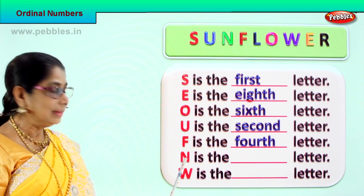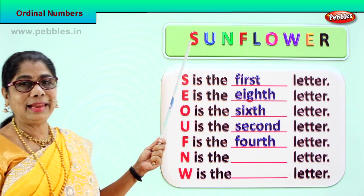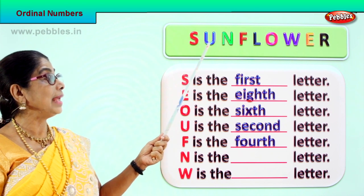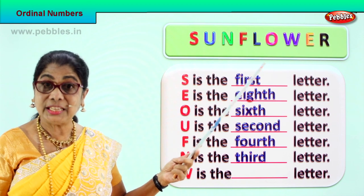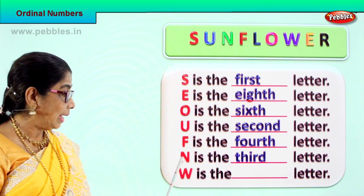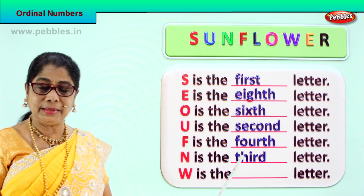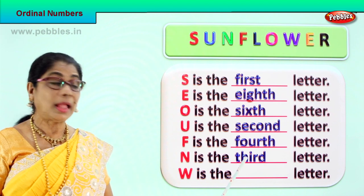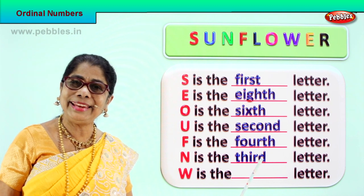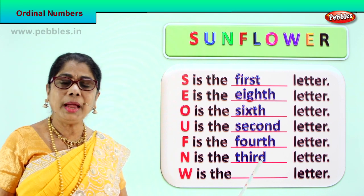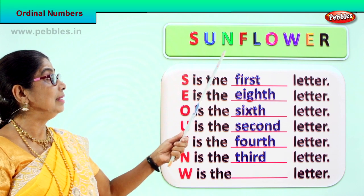Now let's look at another — this letter N here. What is the position of letter N? First, second — N is in the third position. Third. Spell third. N is the third letter. Spell third: T-H-I-R-D. Third. T-H-I-R-D. Third. N is the third letter.